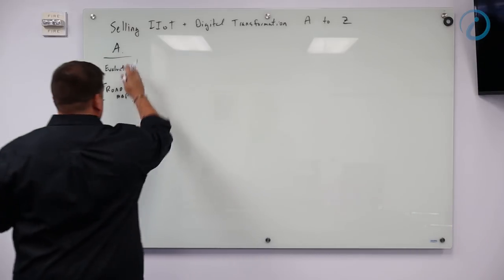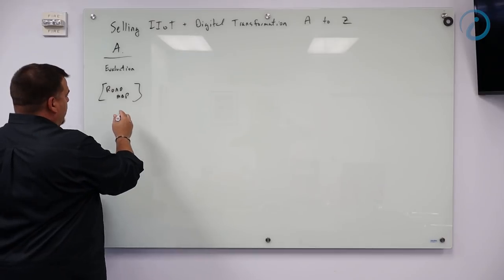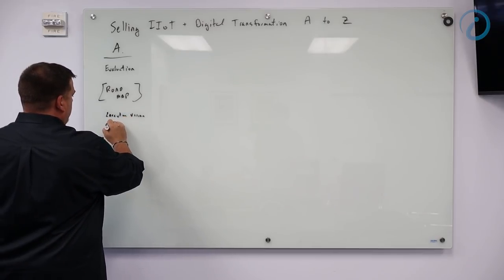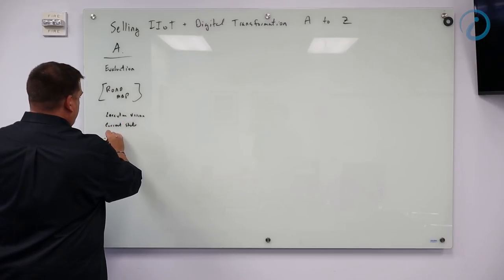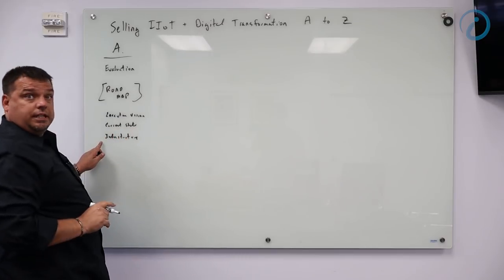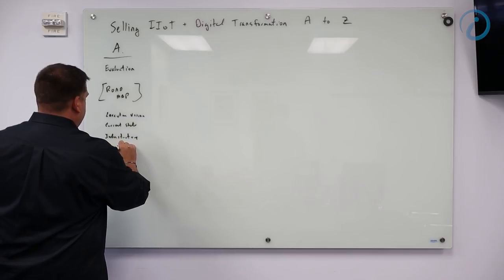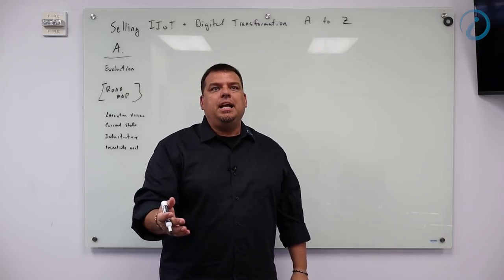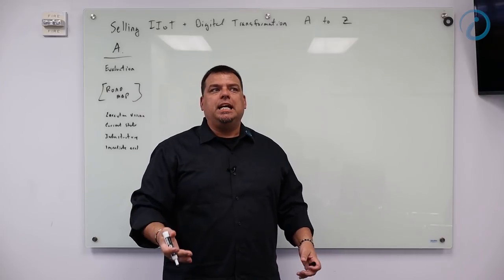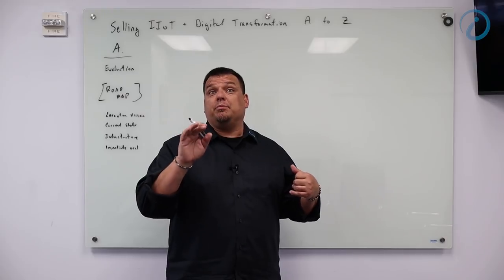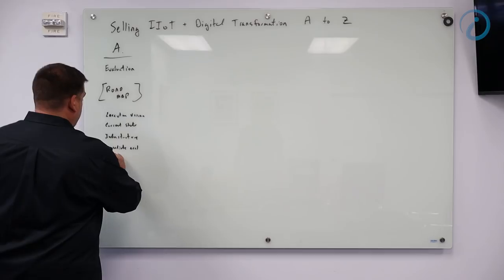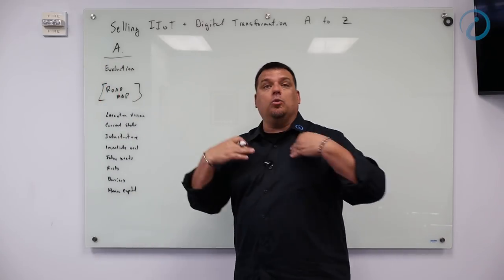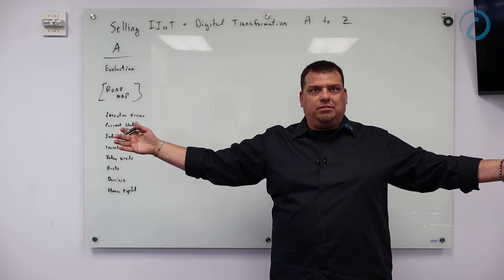That series of meetings is us doing data collection. We're evaluating the entire organization top to bottom. Part of that is we've determined whether they're a values-based organization prior to the roadmap. The roadmap is something the client pays us to do. Essentially, what they do is they hire us to build them a roadmap for success. They're bringing us in to evaluate them from top to bottom and literally draw out a roadmap, how to get from where they are to where they want to go. The first step, the A, is evaluation. That is a deep dive with the organization. We generally go on-site one to three days. During the roadmap phase, the A step is we are evaluating executive vision, the current state, the infrastructure, the immediate need, future needs, risks, barriers, and human capital.